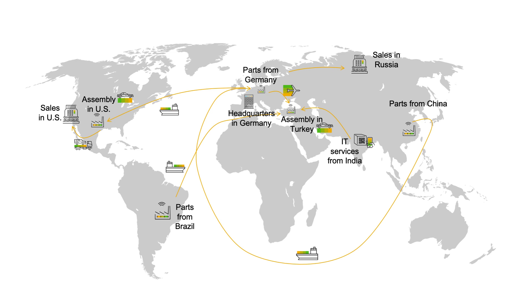Value chains of international organizations span across the globe, whereby they include supplying from third-party vendors or affiliates, producing in company locations involving subcontractors or third-party carriers for transportation. So, how can we optimize where we source, produce, and sell as cost-effectively as possible to maximize our financial performance?